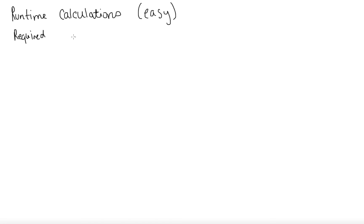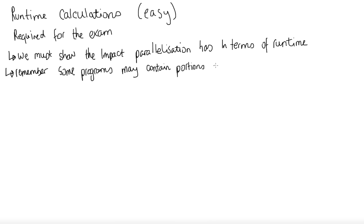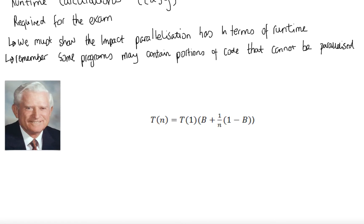Now we're going to talk about runtime calculations. This is required for the exam and we must show the impact of parallelization in terms of runtime. Parallelization is simply about how a problem can be divided into smaller tasks and all be executed at the same time — we're estimating the time it takes to break down a program into smaller subtasks and run. It's important to remember that some programs may contain portions of code that cannot be parallelized, and we call these the serial parts of the program that must be run in the correct order.